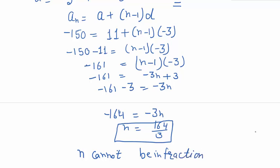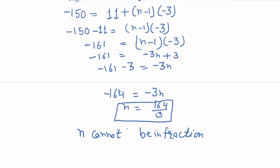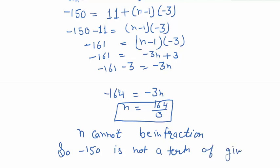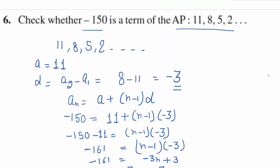So this is not possible, and minus 150 is not a term of the given AP. As a general rule: if any question asks whether a number is a term of an AP, simply find the value of n. If n is a positive natural number, it is a term; otherwise it is not.